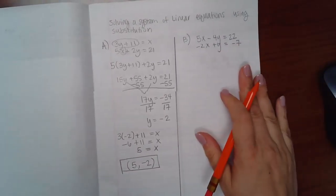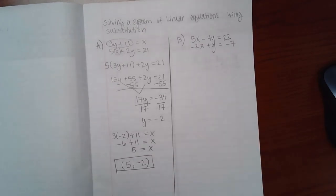Now, b is a little bit more difficult. b does not have a letter isolated already. And yes, you can isolate whichever variable you want, x or y. And you can use whichever equation you want, top equation or bottom equation.